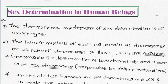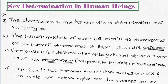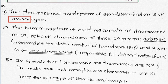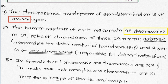Sex determination in human beings - how sex determination occurs in humans. The chromosomal mechanism of sex determination is the XX and XY type. The human nucleus of each cell contains 46 chromosomes. During gamete formation, meiosis occurs, so the gamete has 23 chromosomes.